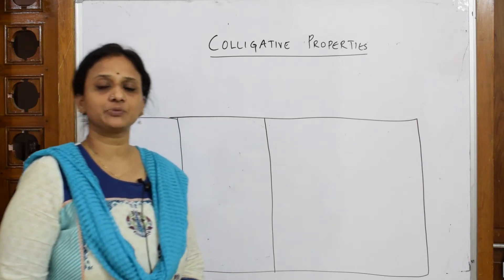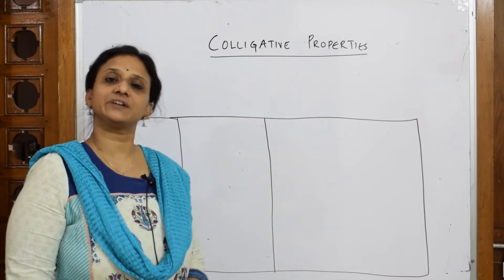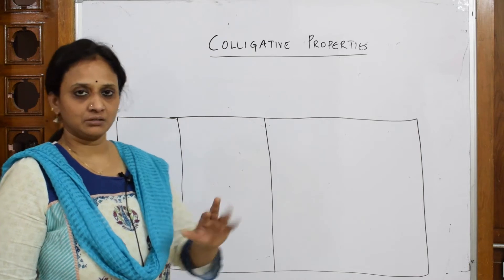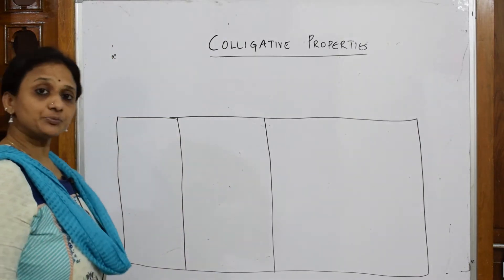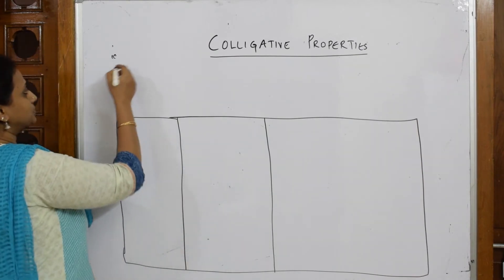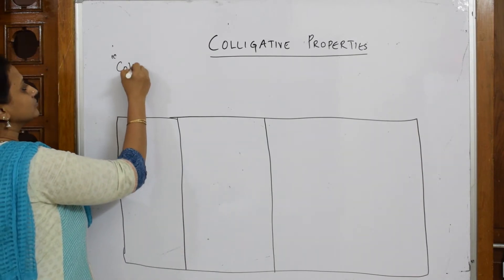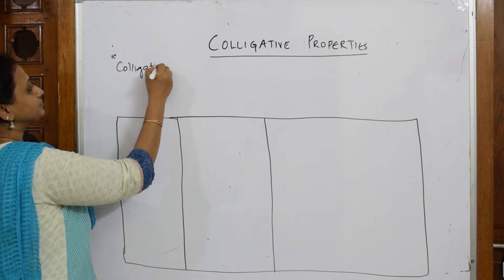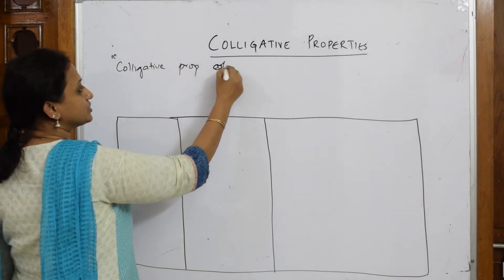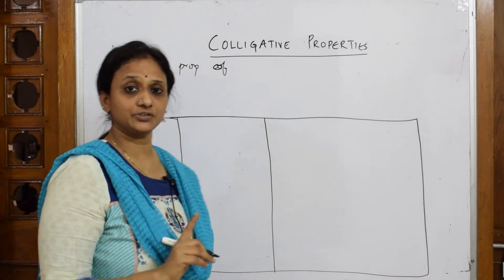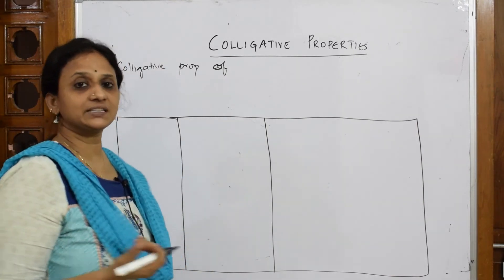So when I have to define the colligative properties, suppose in the exam they ask you to define colligative properties, let us write the definition. Let us start with the inverted comma. So colligative properties are—you can start like this—colligative properties of dilute solution. This is very important, dilute solutions. I will also explain why I am using that word here.